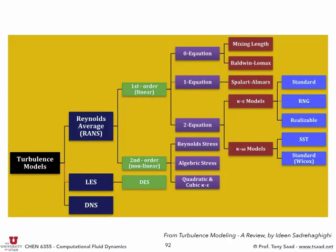Here's a hierarchy of turbulence models. We have RANS models, LES, and DNS. DNS resolves everything with no modeling. In LES, we have eddy viscosity models and dynamic models. Dynamic models are essentially just eddy viscosity models with dynamic computation of constants.